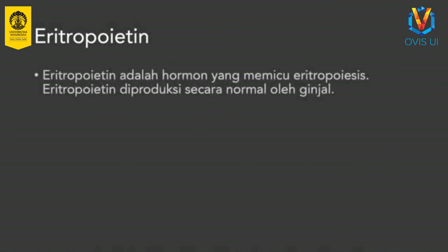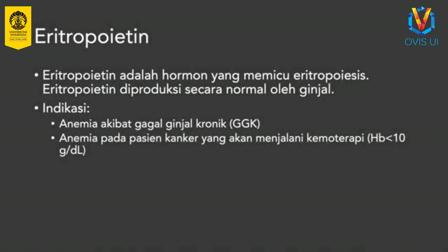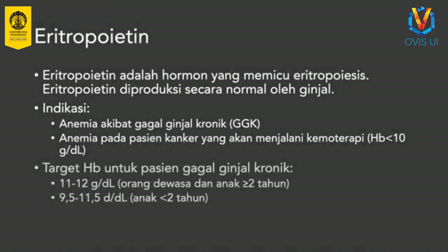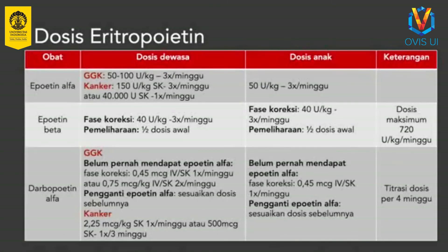Eritropoietin adalah hormon yang memicu eritropoiesis. Eritropoietin diproduksi secara normal oleh ginjal. Eritropoietin diindikasikan pada anemia akibat gagal ginjal kronik dan anemia pada pasien kanker yang akan menjalani kemoterapi. Pemberian eritropoietin diharapkan dapat meningkatkan hemoglobin menjadi 11-12 gram per desiliter pada orang dewasa dengan gagal ginjal kronik. Terdapat berbagai sediaan eritropoietin, antara lain epoietin alpha, epoietin beta, dan darbopoetin alpha. Eritropoietin dapat diberikan secara subkutan maupun intravena. Umumnya pemberian eritropoietin dimulai dari dosis awal atau inisial selama 3 minggu yang kemudian dilanjutkan dengan dosis pemeliharaan.